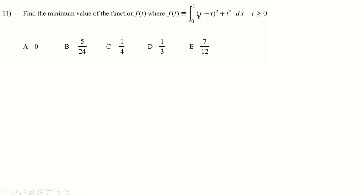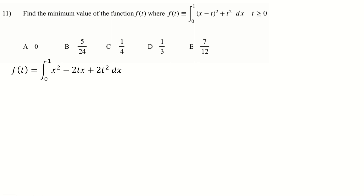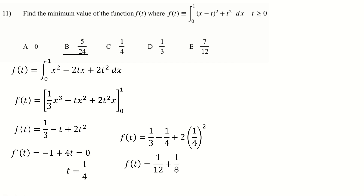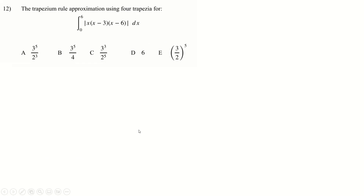Question eleven — find the minimum value. Integrate with respect to x: expand the whole thing out, treat the t's as constants, integrate with respect to x, and put the 1's into the x's. The 0's don't matter. Now we're looking for the minimum value of that as a function of t. Differentiate with respect to t, set to 0, find t equals a quarter. Put that into f of t and calculate — the minimum value is 5 over 24. You could prove it's a minimum, but it's a positive quadratic, so of course it is.